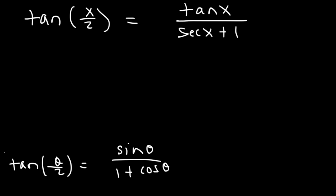So let's replace tangent x over 2 with this, but just without theta using x instead. So tangent x over 2 is sine x divided by 1 plus cosine x.